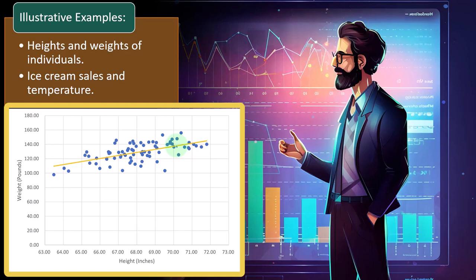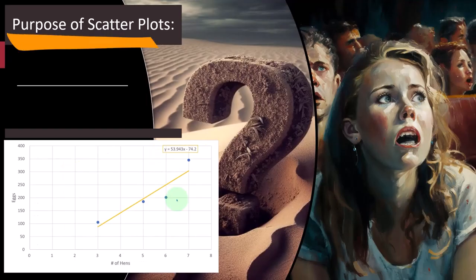Ice cream sales and temperature would be another example: as temperatures go up, you would plot ice cream sales, and you'd think that higher temperatures mean more ice cream sales. That might not always be the case — maybe a cold rainy day happened to have a festival next to your ice cream shop — but in general, that would be the expected relationship.